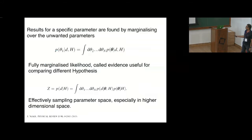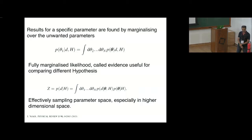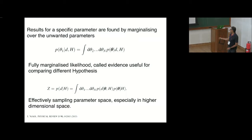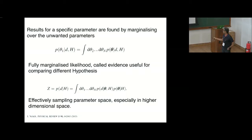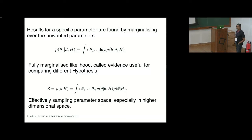There are advantages to using the Bayesian approach. If specific parameters are not sensitive, you can marginalize over them — obtaining marginal distributions by integrating over other parameters, which involves multidimensional integrals. You can also compute the Bayesian evidence to compare different hypotheses based on the signal model. All of these require evaluation or sampling of the likelihood function via multidimensional integrals.